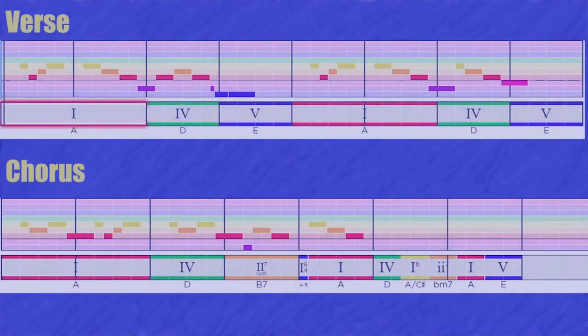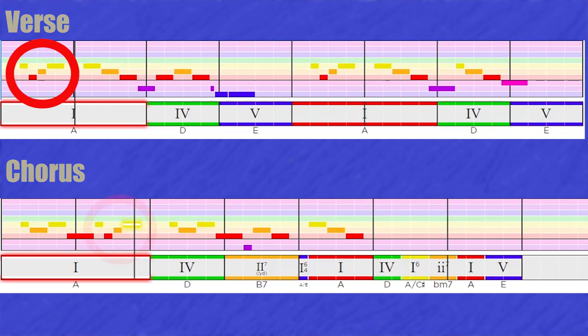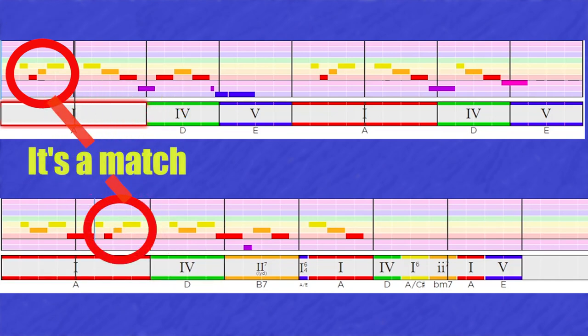For example, we have this one that's pretty obvious. We can hear it at the beginning of the verse and in the chorus. But we also have more less obvious motifs that are repeated in the song.